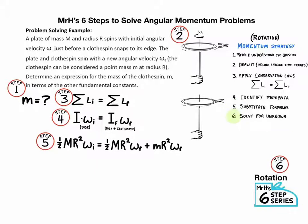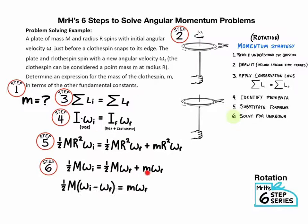Step six is to solve for the unknown. So we're going to try to isolate little M here. Notice there's an R squared in every term. So we can divide everything by R squared and simplify it down to this line. And then once you're there, you might want to subtract the one half M omega final to get this term alone on the right hand side. And then the last step you'll do is to divide by omega final to get M isolated. And there's your final expression.